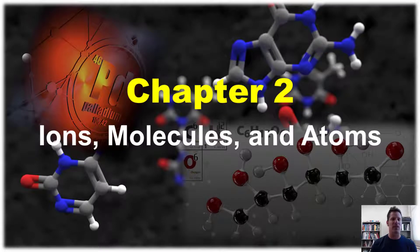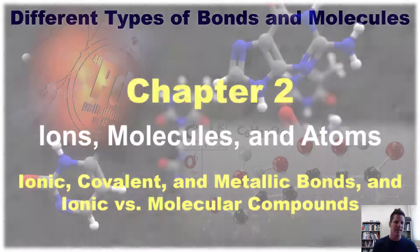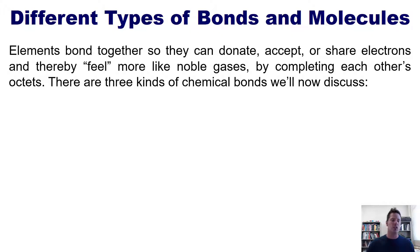Thank you for joining me in my continuing chapter two coverage of ions, molecules, and atoms. In this video I will teach you about ionic, covalent, and metallic bonds as well as ionic versus molecular compounds. Elements bond together so they can donate, accept, or share electrons and thereby feel more like noble gases, as discussed in our preceding video. They do this by completing each other's octets.